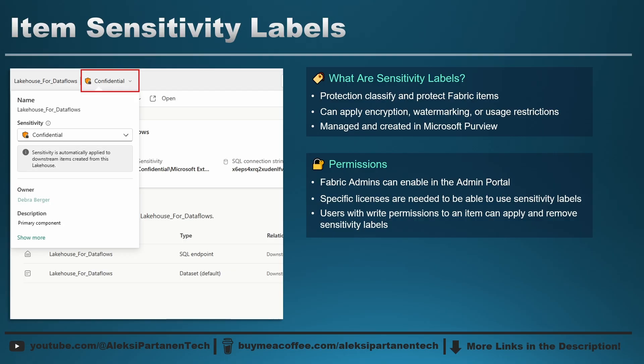In the screenshot, you can see a label called Confidential applied to a lakehouse. It also says this label has been automatically applied to downstream items. This means if you create a dataset or a report from this lakehouse, they will also get that same label since they are using data from this item that has been defined as confidential. This is an optional setting that can be turned on or off from the admin portal.